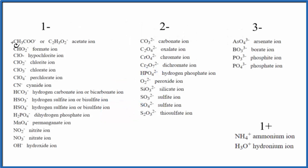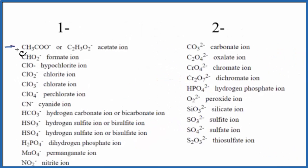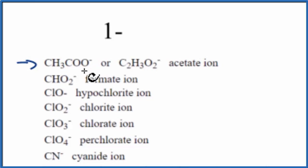So we're looking for the acetate ion, and it's the first one here. It's CH3COO- or C2H3O2-. They're the same thing. Let's go with this C2H3O2-. So we have our acetate ion, and we know the charge is 1-.